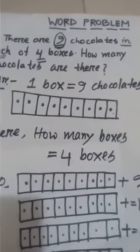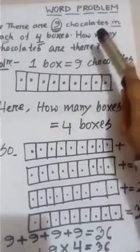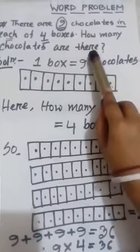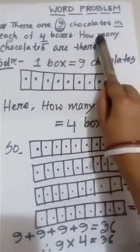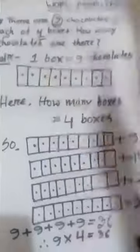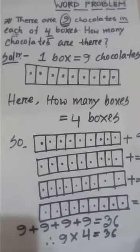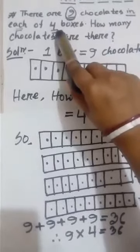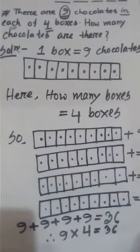Our question: There are 9 chocolates in each of 4 boxes. How many chocolates are there? In each box, that means 1 box equals how many chocolates? 9 chocolates. In the question, there are 4 boxes. We find out the number of chocolates in 4 boxes.